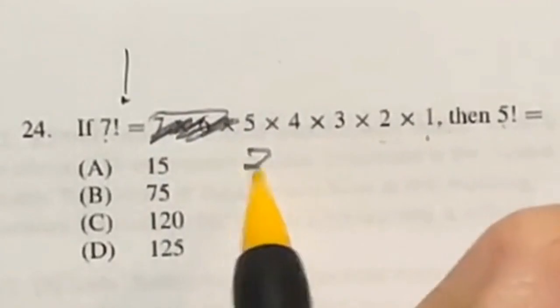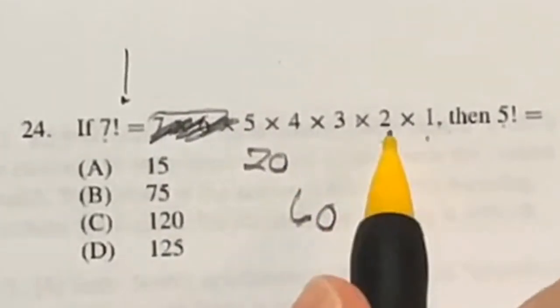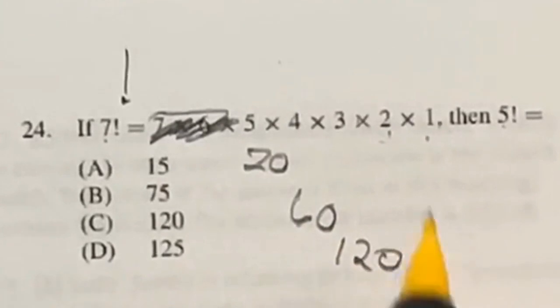So 5 times 4 is 20, times another 3 would give us 60, times another 2 would give us 120, and 1 will keep it the same. So our final answer is C.